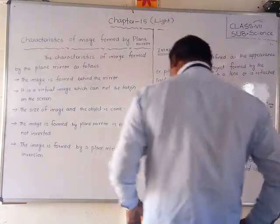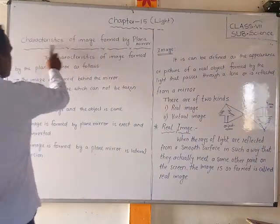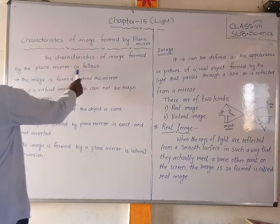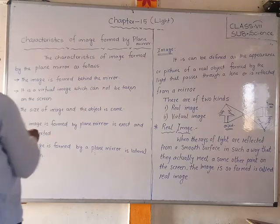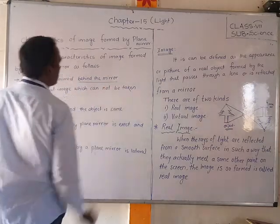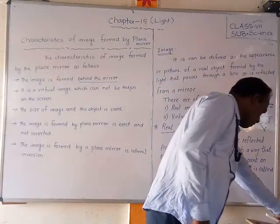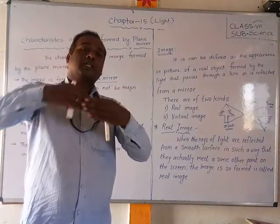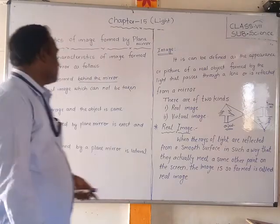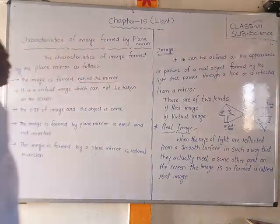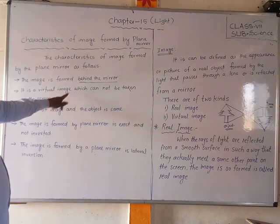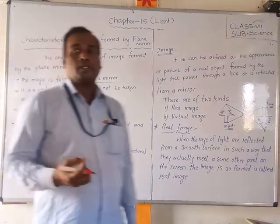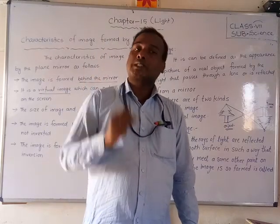Let us see the characteristics of the image formed by a plane mirror. The first characteristic is that the image is formed behind the mirror. The image is not formed on a screen in front — it appears behind the mirror. The second characteristic is that it is a virtual image, which cannot be captured on a screen, because the image forms behind the mirror.